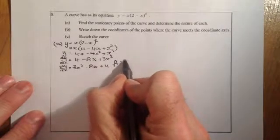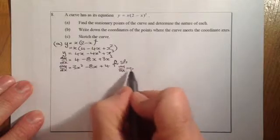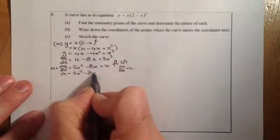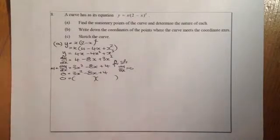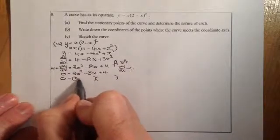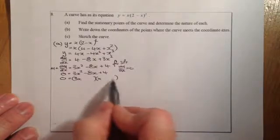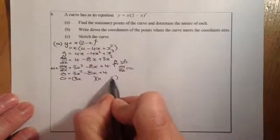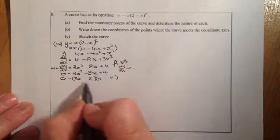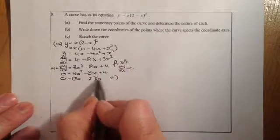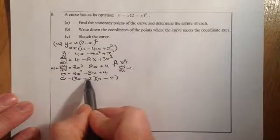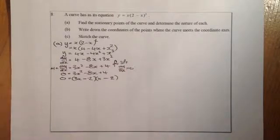For the stationary points, I'm going to set dy/dx equal to zero, because that's just a gradient equation. So zero equals 3x squared minus 8x plus 4. I'll factorize that — you need to be good at factorizing especially when the coefficient of x squared is greater than 1. So that gives me (3x minus 2)(x minus 2). Checking: 3x squared, minus 6x, minus 2x gives minus 8x, and minus 2 times minus 2 gives plus 4. Correct.